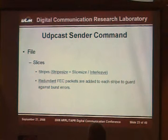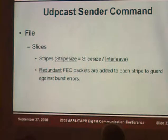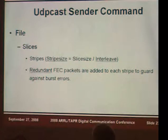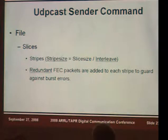This is my attempt to explain the FEC. The documentation at the udpcast.linux.lu website talks about FEC. The file is divided into slices, slices are divided into stripes, and then FEC packets are added to each stripe to guard against burst errors. Adjacent packets aren't in the same stripe — you add redundancy to avoid burst errors. I'm more interested in how little FEC I can use to transmit medical imagery.